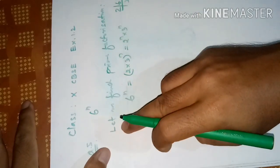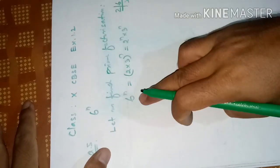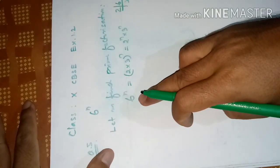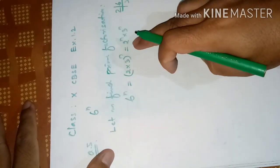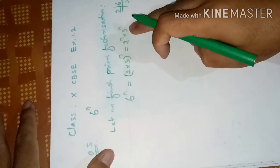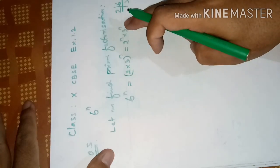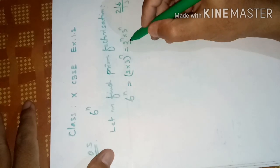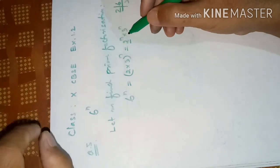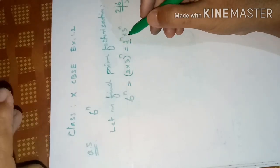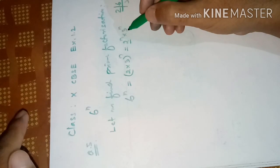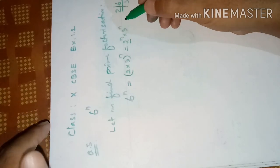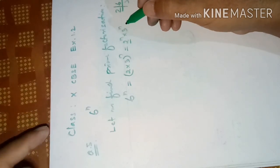So we found the prime factorization of 6^n is 2 to the power n multiplied by 3 to the power n. Here, 2 is a factor and 3 is a factor, but 5 is not there.